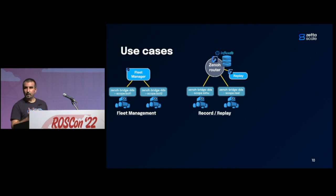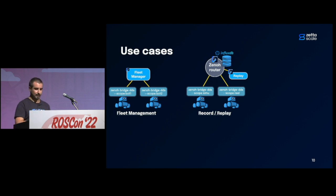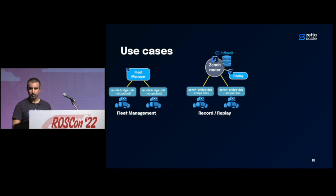You can also deploy an InfluxDB database to record all publications made by teleoperation to robots, or publications made by the robots themselves. For example, you can have a simulated robot with scope 'simu' and a real robot with scope 'real'. If a teleop operation drives the simulated robot, all commands will be recorded in the InfluxDB time series. Later, a replay application in Xeno can get all the commands from InfluxDB and replay them, just changing the topic name to apply the simulated commands to the real robot.